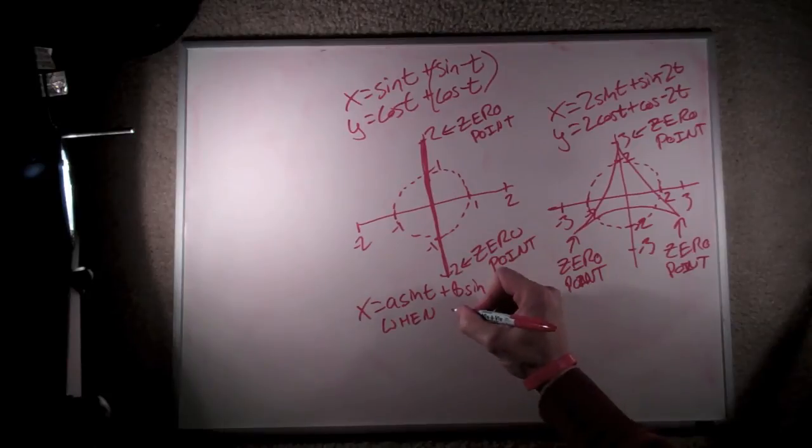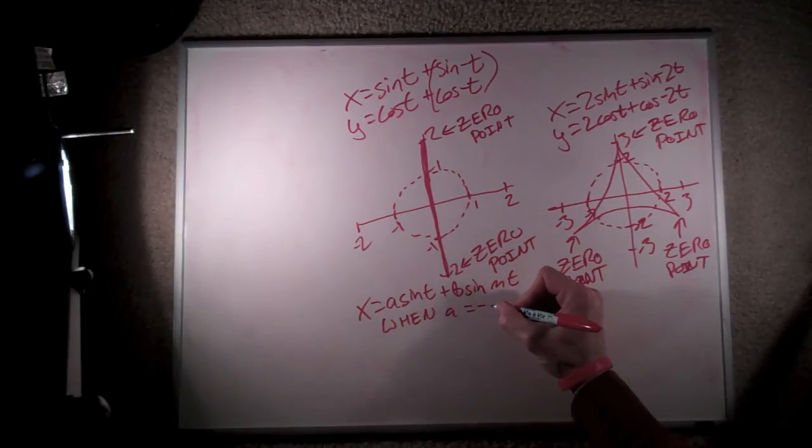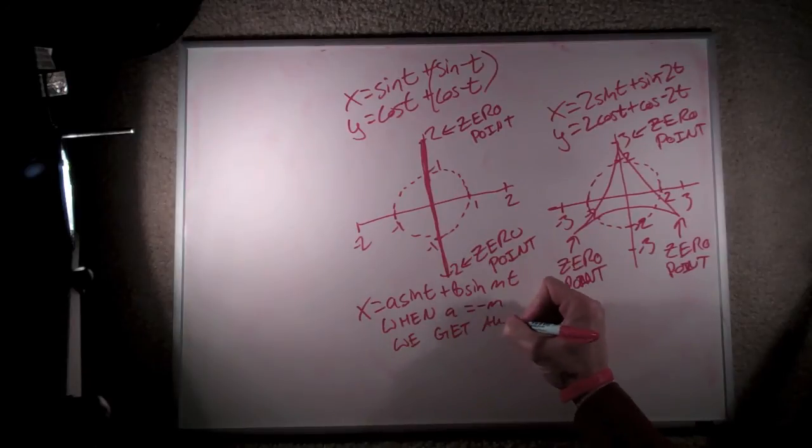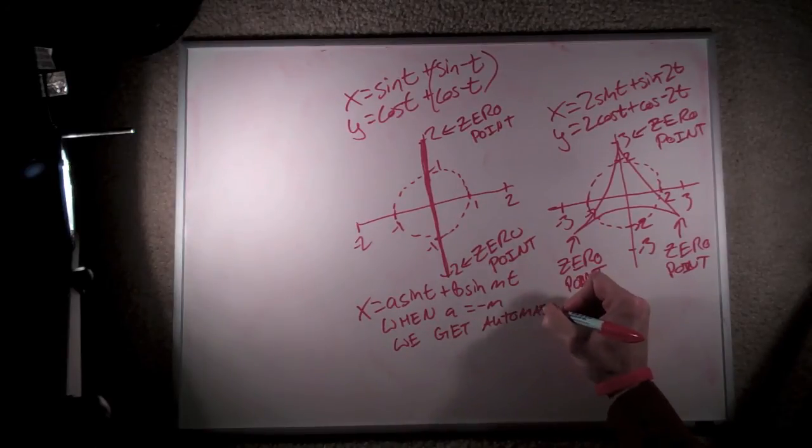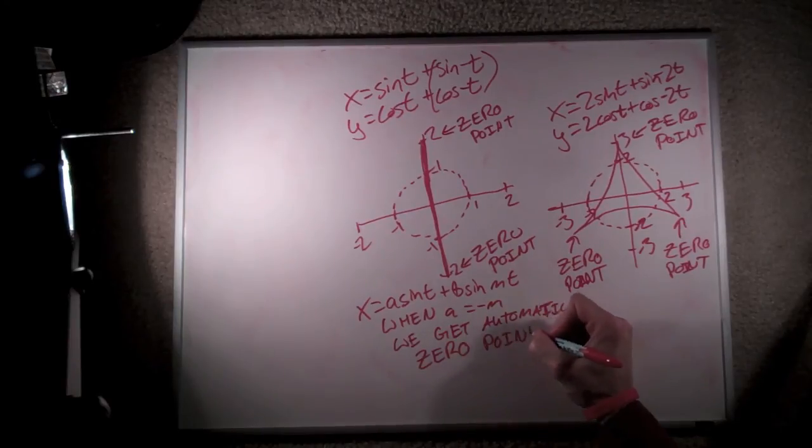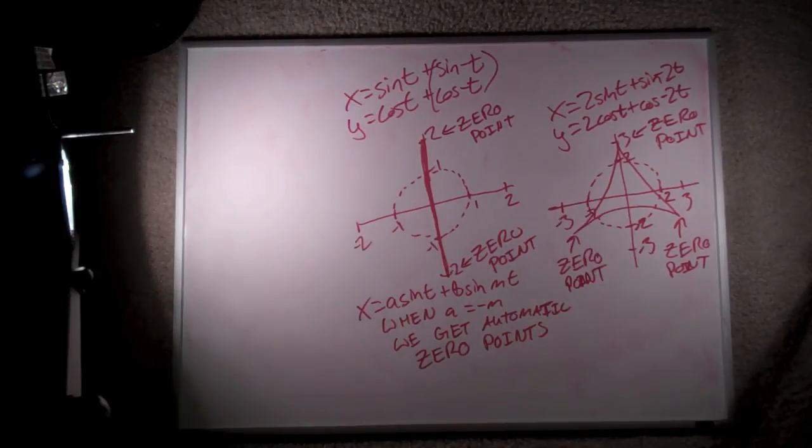So if we add the variable m to this equation right before t, then anytime b is equal to one, we can say that when a and m have the same value and m is a negative number, we get automatic zero points out of it. Thanks to Charlie for that insight. So enjoy and have some more fun with your POI math. Peace.